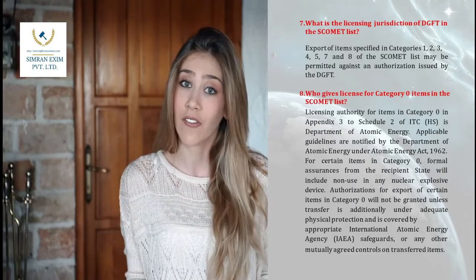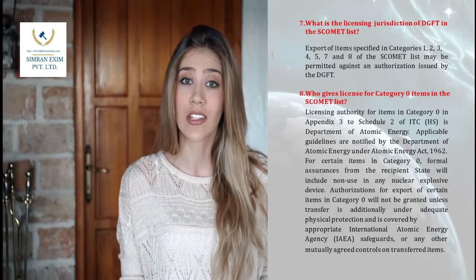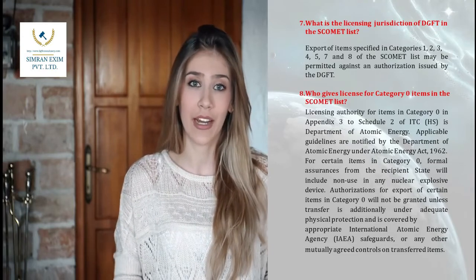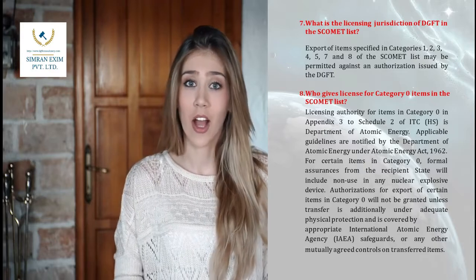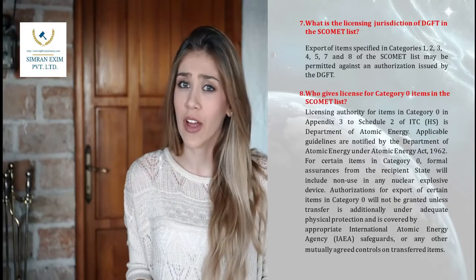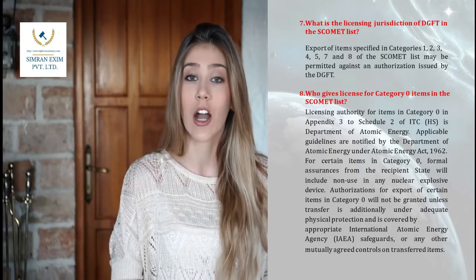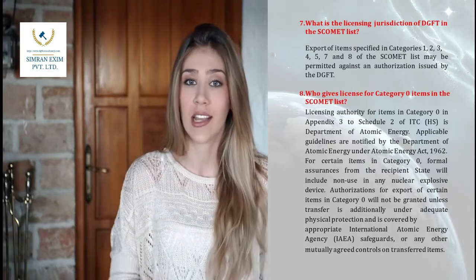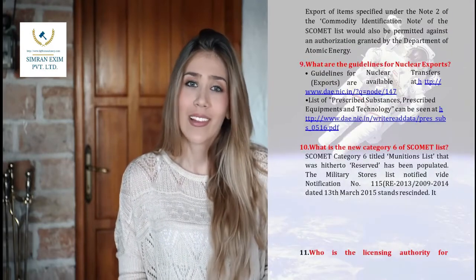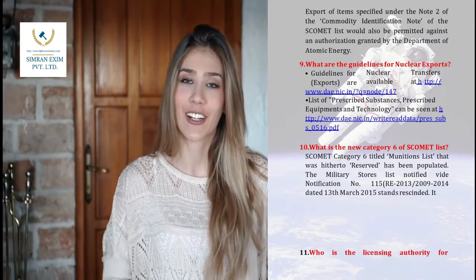Who gives the license for Category 0 items in the SCOMET list? The licensing authority for items in Category 0 in Appendix 3 to Schedule 2 of ITC (HS) is the Department of Atomic Energy. Applicable guidelines are notified by the Department of Atomic Energy under the Atomic Energy Act, 1962. For certain items in Category 0, formal assurances from the recipient state will include non-use in any nuclear explosive device. Authorizations for export of certain Category 0 items will not be granted unless the transfer is under adequate physical protection and covered by appropriate IAEA safeguards or other mutually agreed controls.